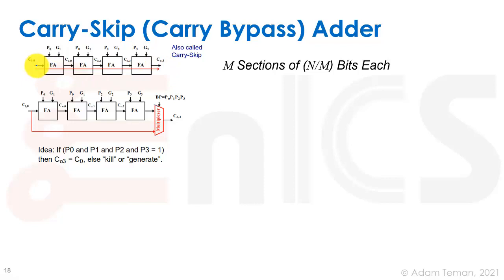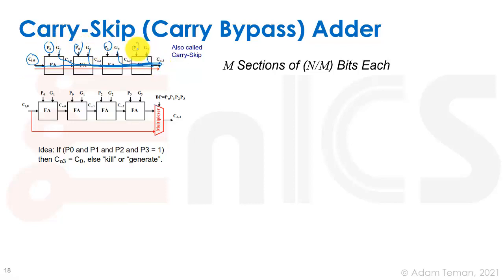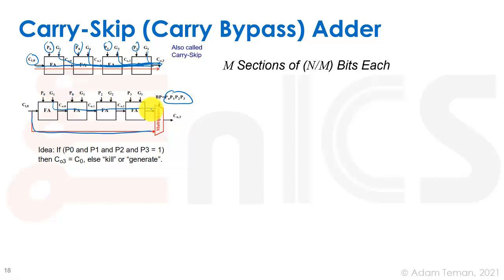If any stage was a generate, we get a shorter path. The only time we need the carry-in to ripple all the way to the end is if all bits were propagate. In that case we can take the AND of all four propagates and feed it into the multiplexer — but for a four-bit block alone, this doesn't really help us.